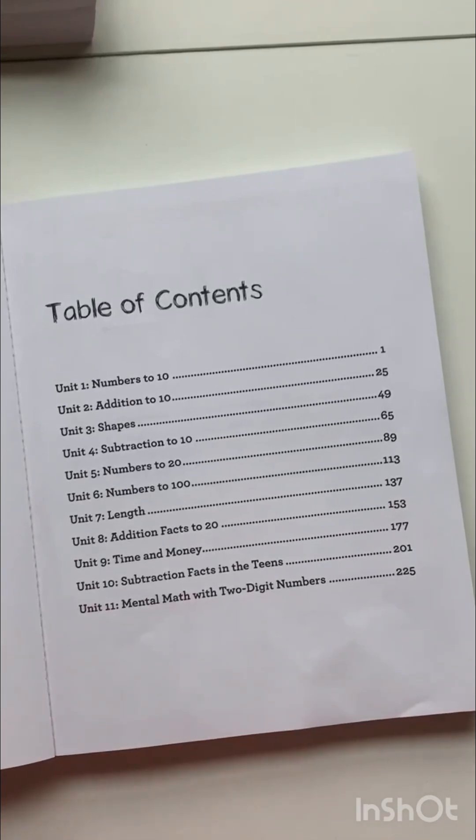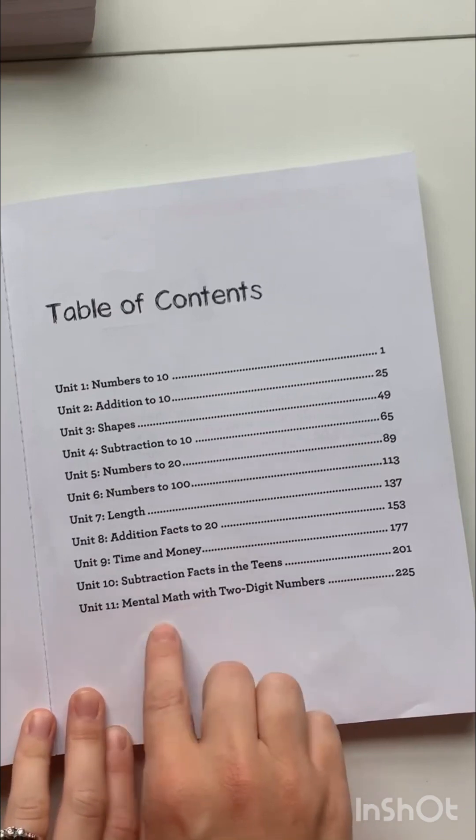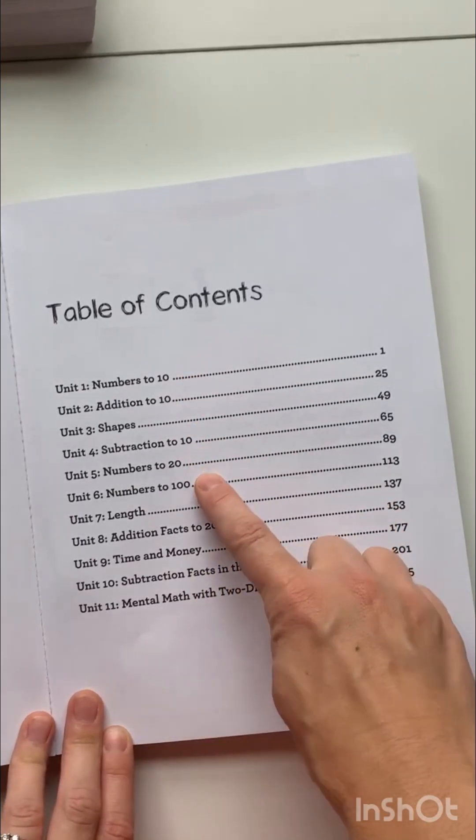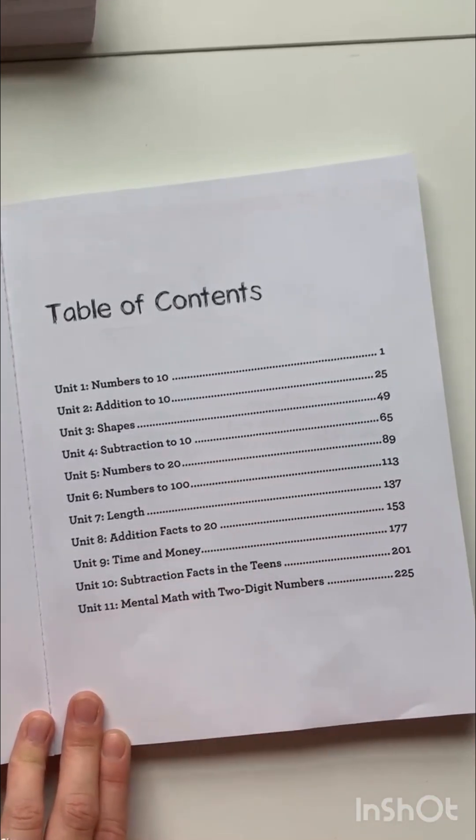And I want to kind of show you how the addition and subtraction progresses as well. There's some bigger numbers there. And if we go towards the last lessons, these are kind of the last few. I said the last thing, but I definitely have just a little bit more. This table of contents might have been better to show you. You can see we're doing numbers to 10, addition, subtracting to 10, 20, numbers to 100, addition facts to 20. And then towards the end, there was some mental math in there. That's kind of what I was showing you there.